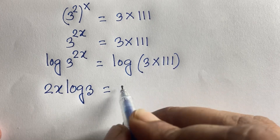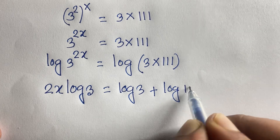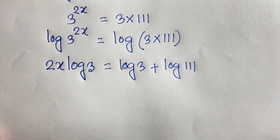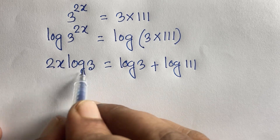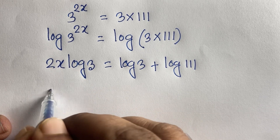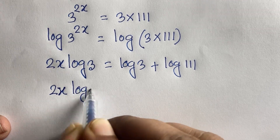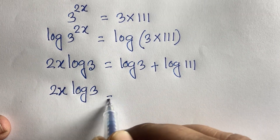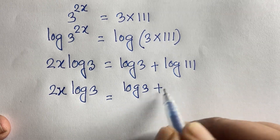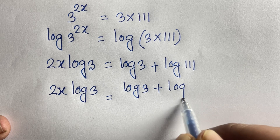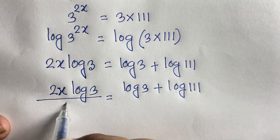Using the log product rule — log(a·b) = log a + log b — the right side becomes log 3 + log 111. So 2x · log 3 = log 3 + log 111. Now I divide both sides by log 3.